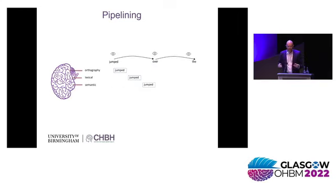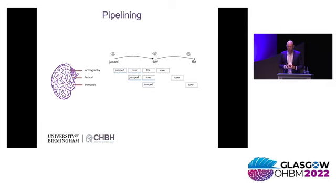This is a different way of showing exactly the same thing. We have the visual hierarchy where orthography, lexical, and semantic information is being processed. 'Jumped' is moving down the hierarchy — when it moves on from orthography to lexical processing, that leaves open for the next word 'over' to be processed, and so forth. A little later, the eyes are moving to the word 'over,' and then the whole thing starts again with respect to the next set of words. This is the pipelining mechanism in a nutshell that we are currently investigating.